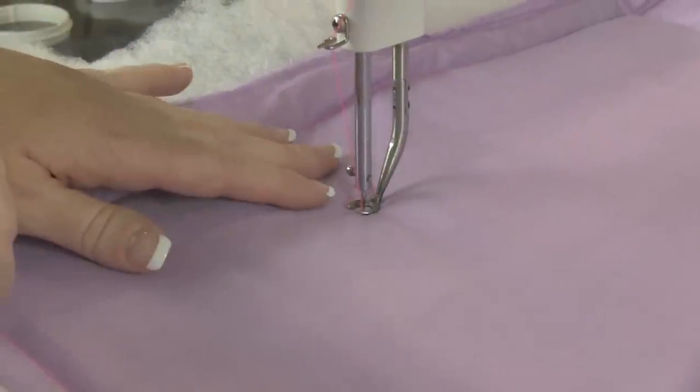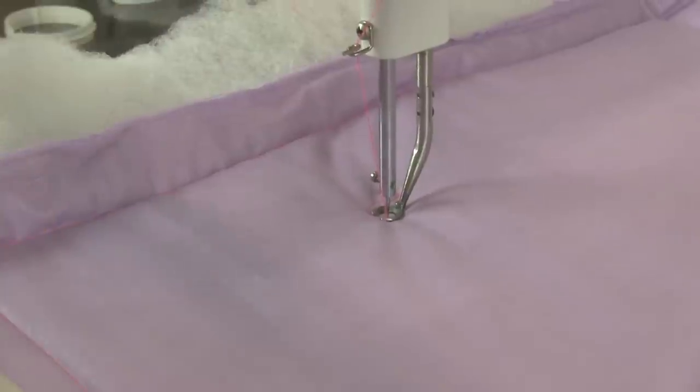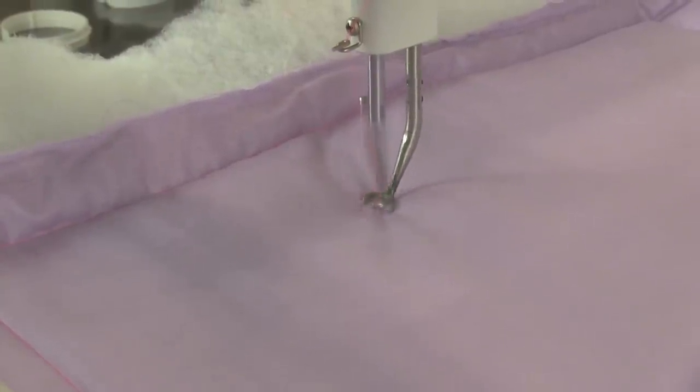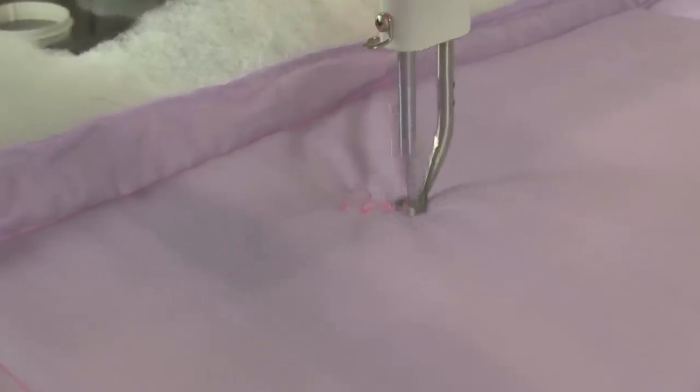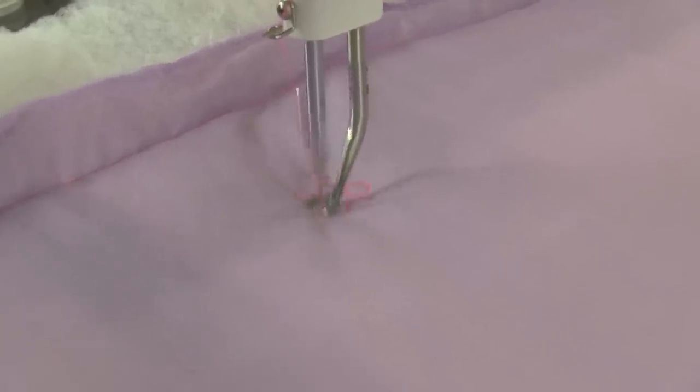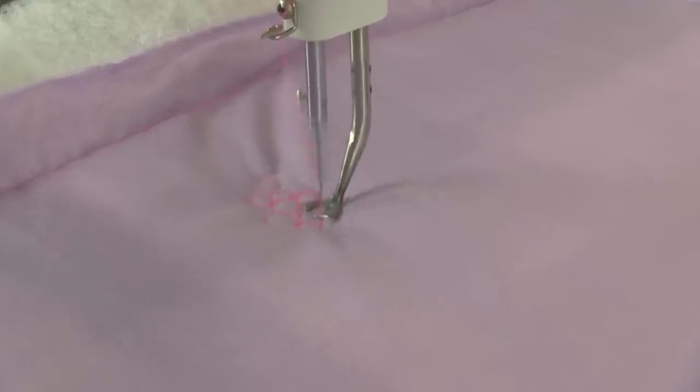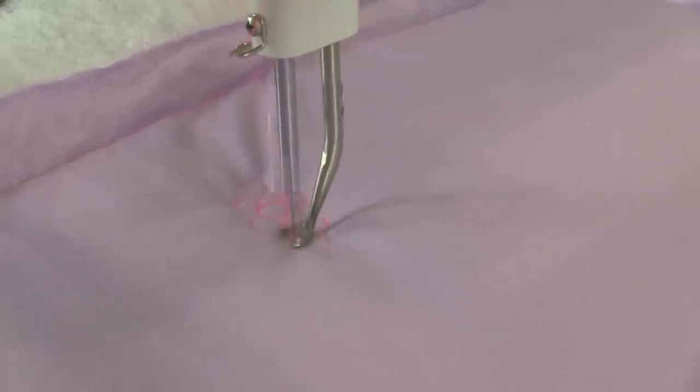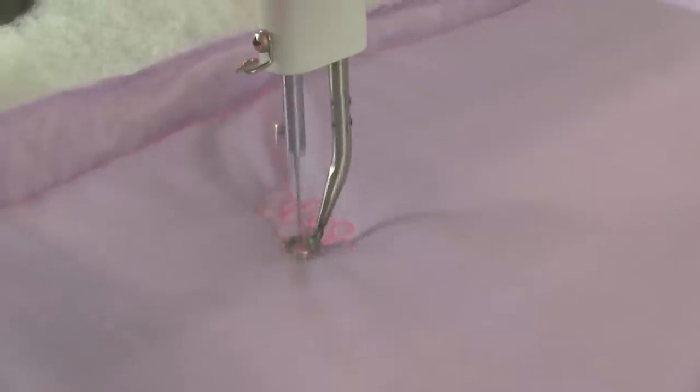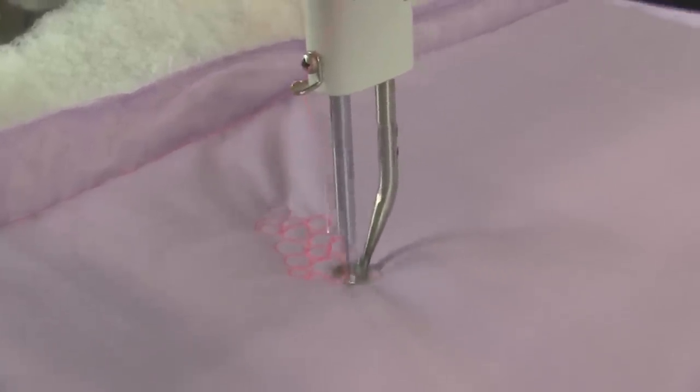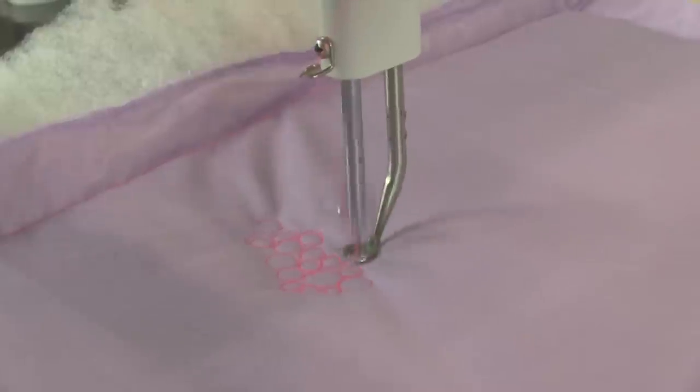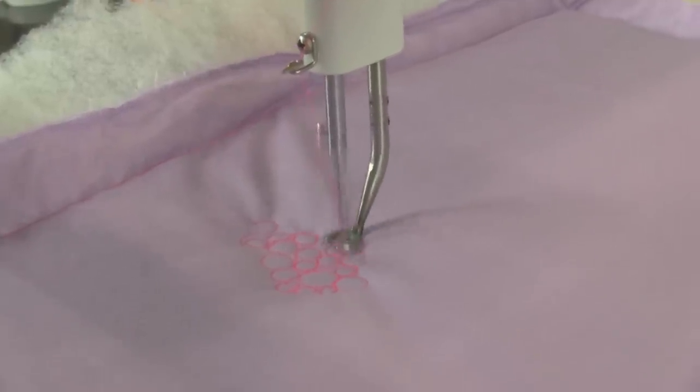A nice background filler around applique is pebble work. It's just small circles and the key to pebble work is to vary the size of your circles. It makes it go a little faster and the eye doesn't notice the small symmetrical changes, so it helps fill the space and it's very forgiving.